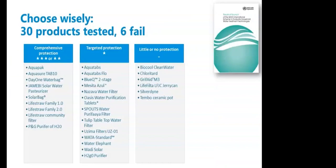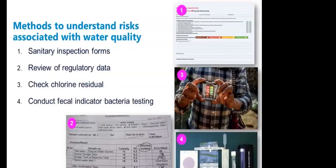For water treatment technology: check whether whatever treatment technology you're installing has been tested by WHO and see where it falls. If it hasn't been tested, demand that manufacturers provide evidence of effectiveness in removing the main pathogens of concern. For general practice where the key pathogen is unknown, comprehensive protection (two or three stars) is recommended — meaning devices that remove all three pathogen types. Many devices fall only in the 'targeted protection' category, removing only two of the three pathogen groups, so be careful as you may not be getting full protection. Don't buy devices with little or no protection.